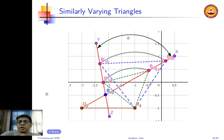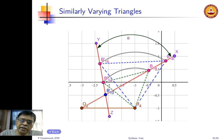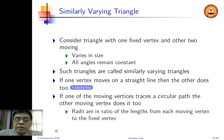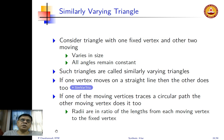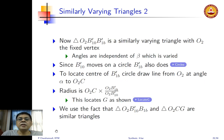B1a and B1b move along the line O2X; since one moving vertex traces a straight line, the other moving vertex B'1a, B'1b also traces a straight line, and the angle between these lines is theta. Now, what if a moving vertex traces a circular path instead? Then the other moving vertex also traces a circle, and the radii of the two circles are in the ratio of the distances from each moving vertex to the fixed vertex.